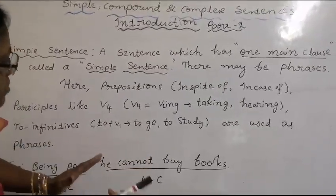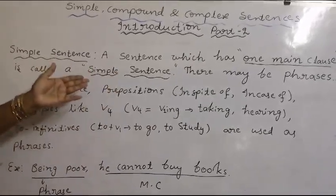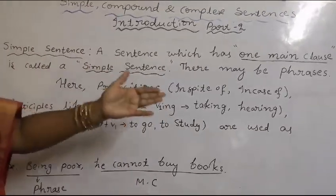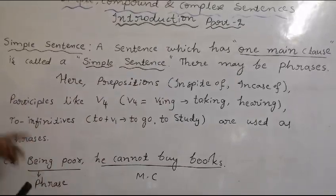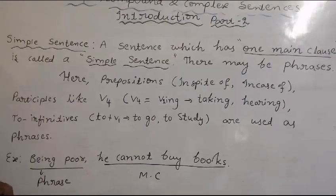One main clause is there - we already learned that in simple sentences. Sometimes phrases may be there; without having phrases, one sentence will still be there. In this example, 'Being poor, he cannot buy books,' I used a phrase.